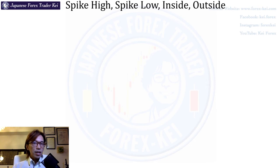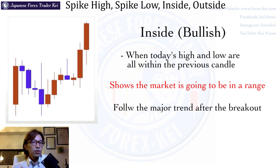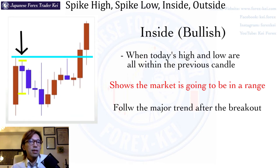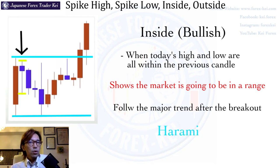This is called the inside bar. What this price action looks like is when today's candle is within the high and low of the previous candle — this pattern is called inside. Looking at this example, the high is here and the low is down here. And if you look at the one before, the high was at this level and the low was at this level. So the current high and low are all within the previous high and low. This is called inside, or in Japanese, it's called the harami candle pattern. What this shows is that the market is going to be in a range after this — it indicates a consolidation is going to happen.